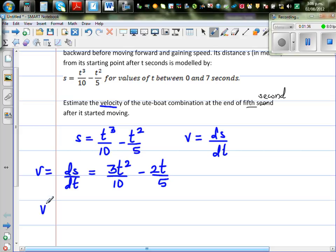The question is what is your velocity when t equals 5 seconds. That's as simple as that. To put this back in this equation, your velocity when t is 5 would be 3 times 5 squared over 10 minus 2 times 5 over 5.